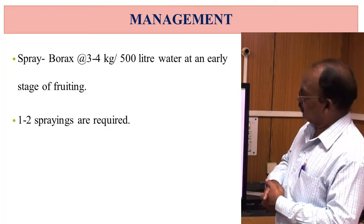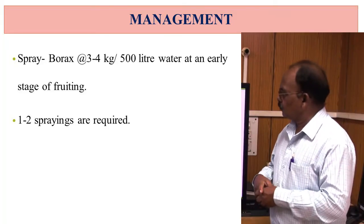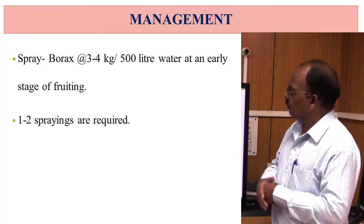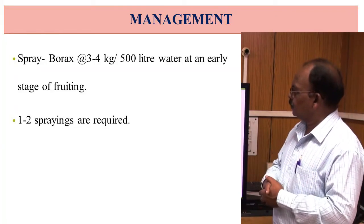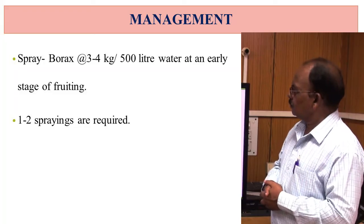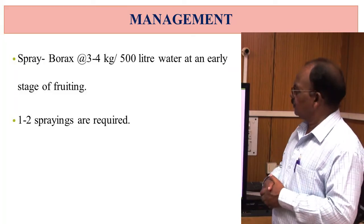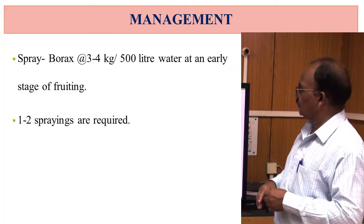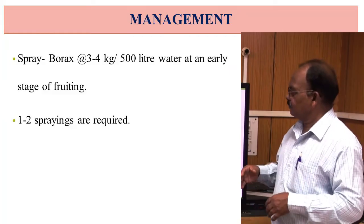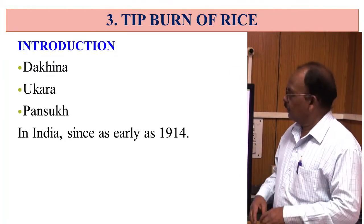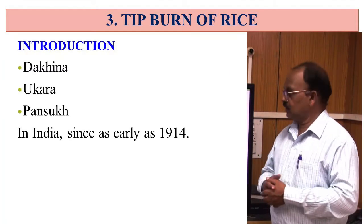For management, one to two sprays of borax at the rate of 3 to 4 kg per 500 litres of water should be applied at an early stage of fruiting.